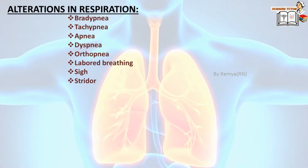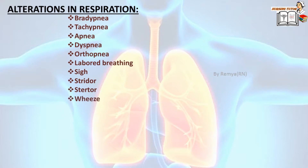Stridor — a high-pitched groaning sound during inspiration that occurs in cases of blockage of the upper airway. Stertor — a snoring sound occurring when secretions are present in the trachea. Wheeze — a high-pitched whistling sound produced due to partial obstruction of the airway; most common in asthma clients.